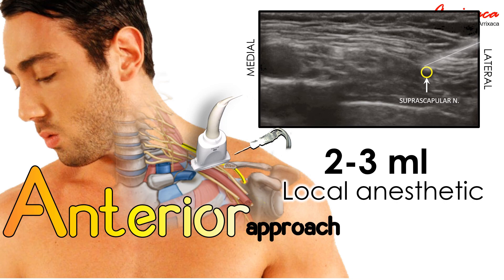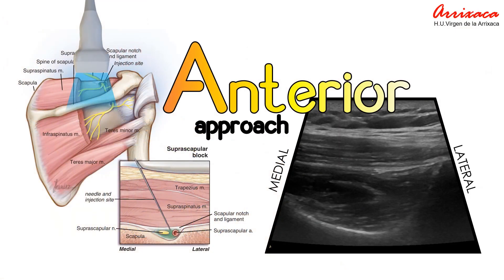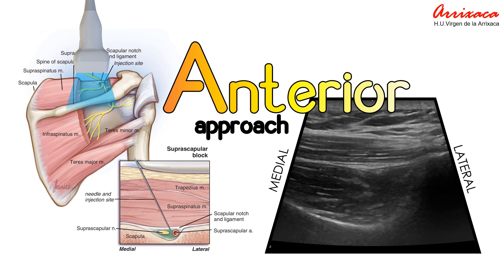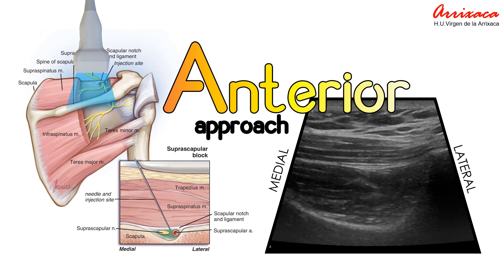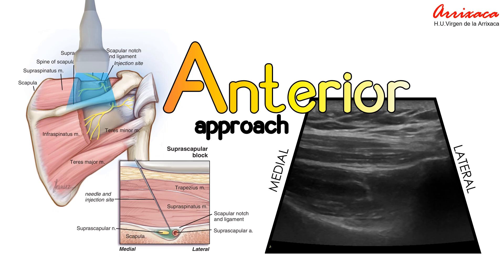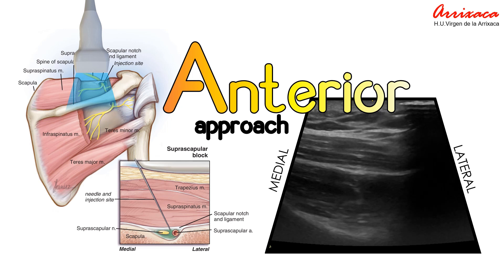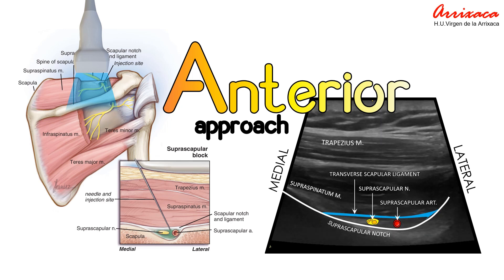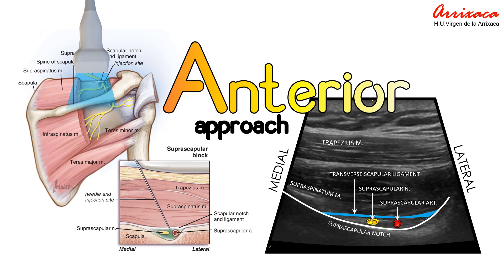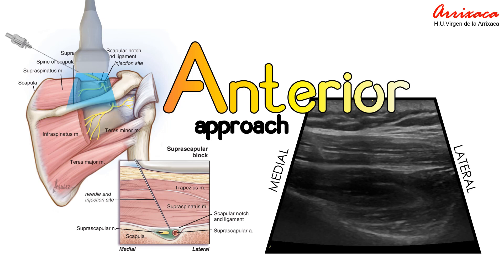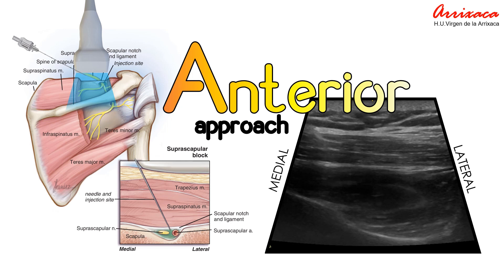The ultrasound transducer should be placed parallel to the scapular spine. By moving the transducer cephalad, the suprascapular fossa can be identified. While imaging the supraspinatus muscle and the bony fossa underneath, the transducer should be slowly moved laterally to locate the suprascapular notch. The suprascapular nerve can occasionally be seen as a round, hypoechoic structure beneath the transverse scapular ligament in the scapular notch.